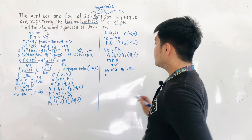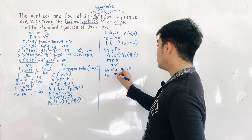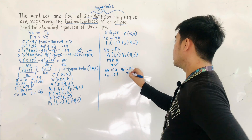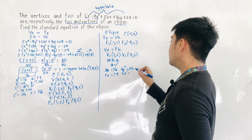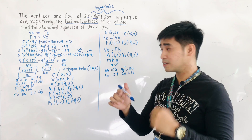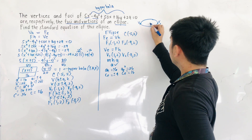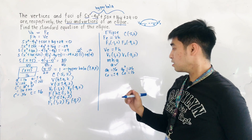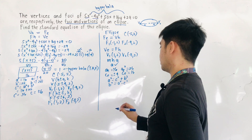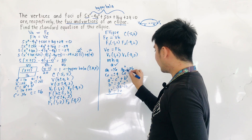For the ellipse, a is the largest value. Since this is an ellipse, a² equals c² plus b², so b² equals a² minus c², which gives 36 minus 16, therefore b² equals 20. We now have a² equals 36 and b² equals 20, and we are ready to write the equation. This is a major horizontal axis ellipse.